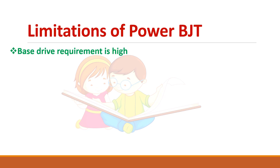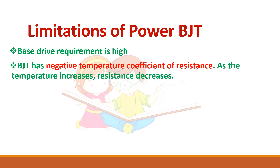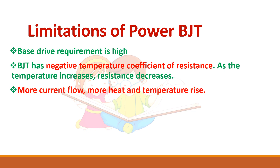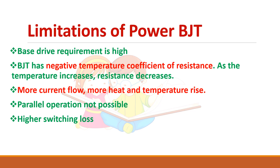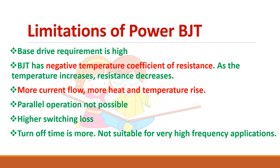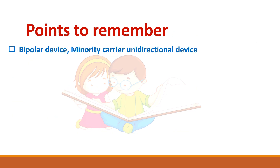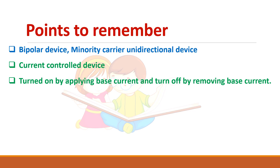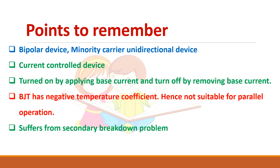The limitations of power BJT are: base drive requirement is high; BJT has a negative temperature coefficient, meaning as temperature increases, resistance decreases, more current flows, temperature rises further — so parallel operation is not possible; switching losses are high; and turn-off time is long, making it unsuitable for very high frequency applications. Key points: it is a bipolar, minority carrier, unidirectional, current-controlled device. It is turned on by applying base current and turned off by removing it. It suffers from secondary breakdown and has a complex base drive circuit.